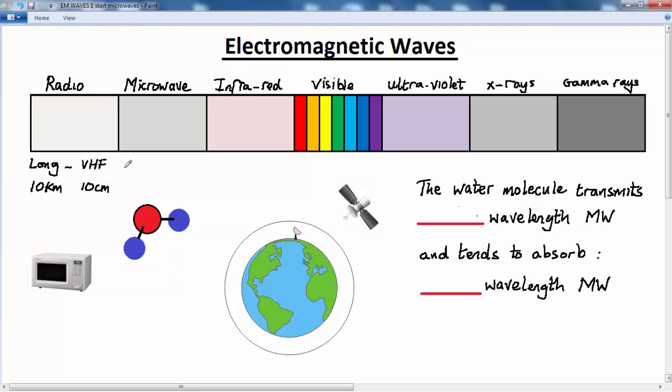And now microwaves, well they extend from round about 10 centimeters through to 1 centimeter as a rule of thumb. Now since the wavelength is decreasing as we move in this direction the frequency is increasing, so microwaves have higher frequencies than radio waves and as a result they're able to carry more information.